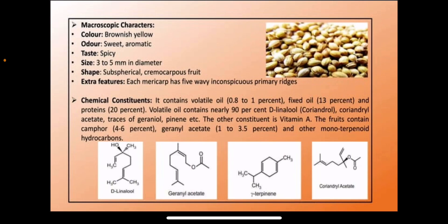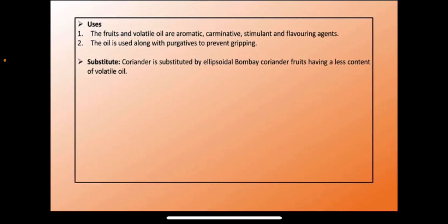Chemical constituents of coriander: it contains volatile oil 0.8 to 1%, fixed oil 13%, proteins 20%. The volatile oil is nearly 90% D-linalool, with coriandrol, camphor 4 to 6%, traces of geraniol, pinene, and it also constitutes vitamin A. The fruit also contains monoterpenoid hydrocarbons. Mainly it contains D-linalool, geranyl acetate, gamma-terpinene and coriandrol acetate.